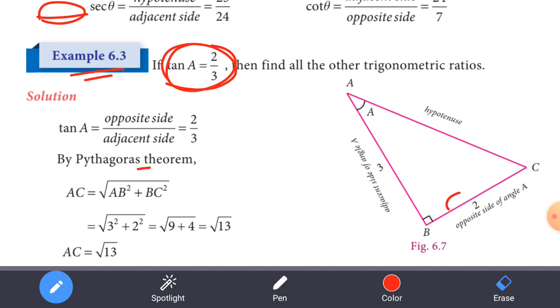So tan A is equal to 2 by 3. That is opposite over adjacent. Then opposite is 2, adjacent is 3.